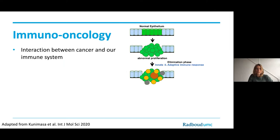These tumor cells are different from normal cells. They can express, for example, different antigens that are not present on normal cells, and in that way they can be recognized by the immune system. These immune cells will infiltrate the tumor, and for a certain period during tumor development, there is a balance between the growth of the tumor cells and the elimination of the cancer cells by the immune system — what we call the equilibrium phase.